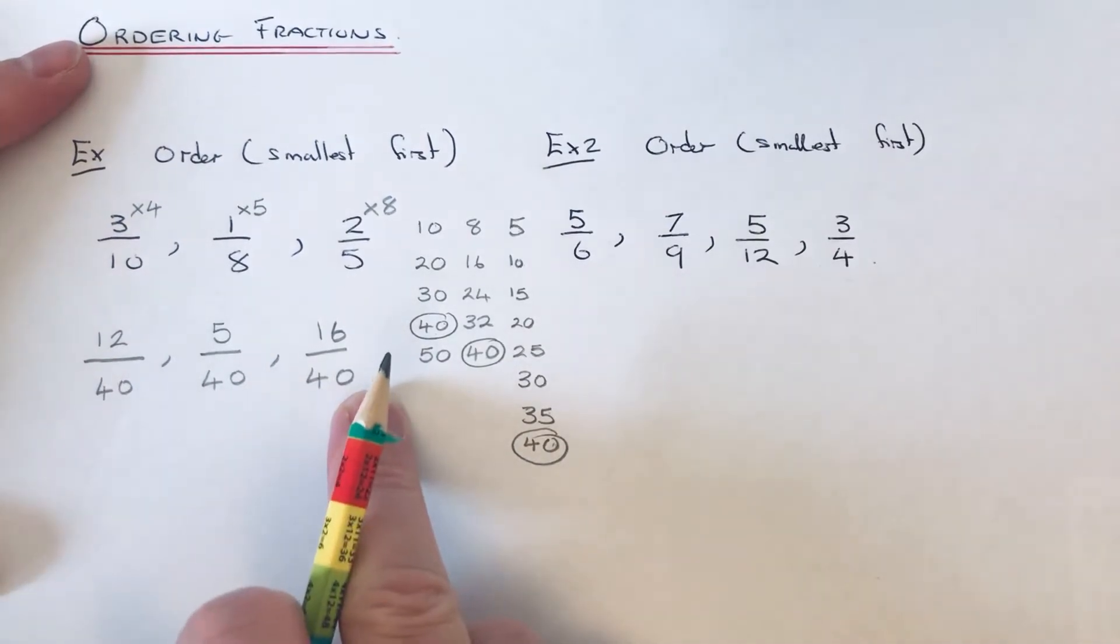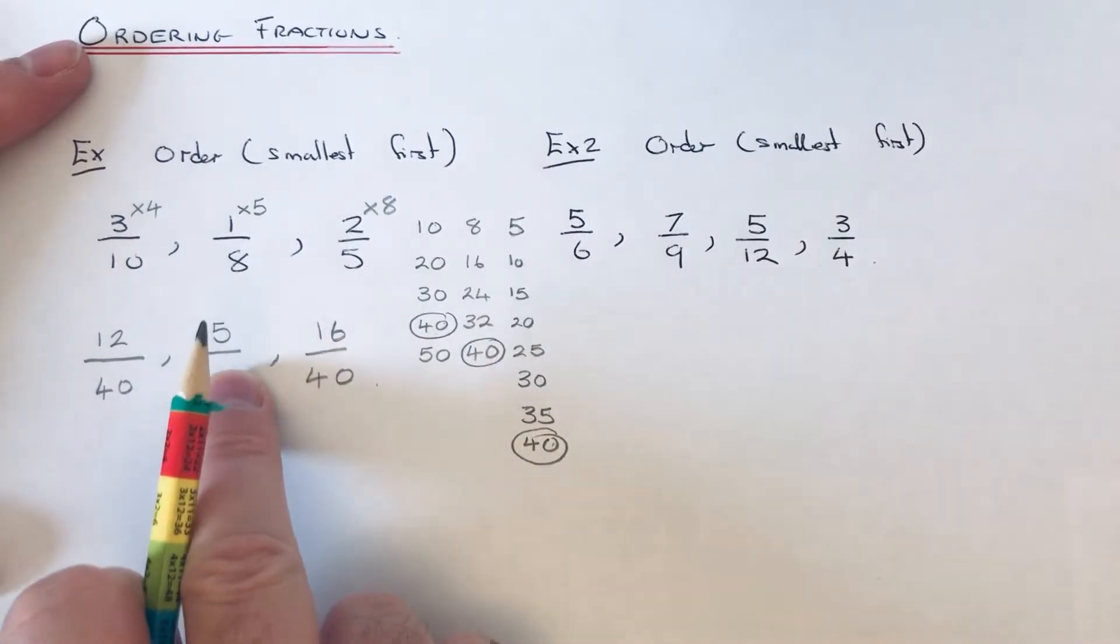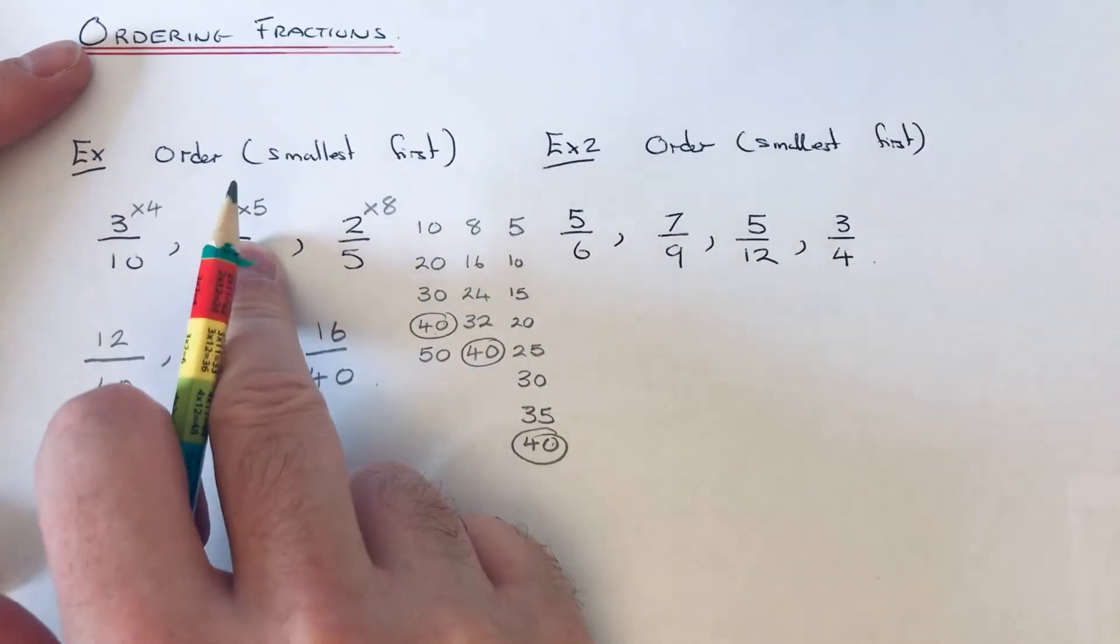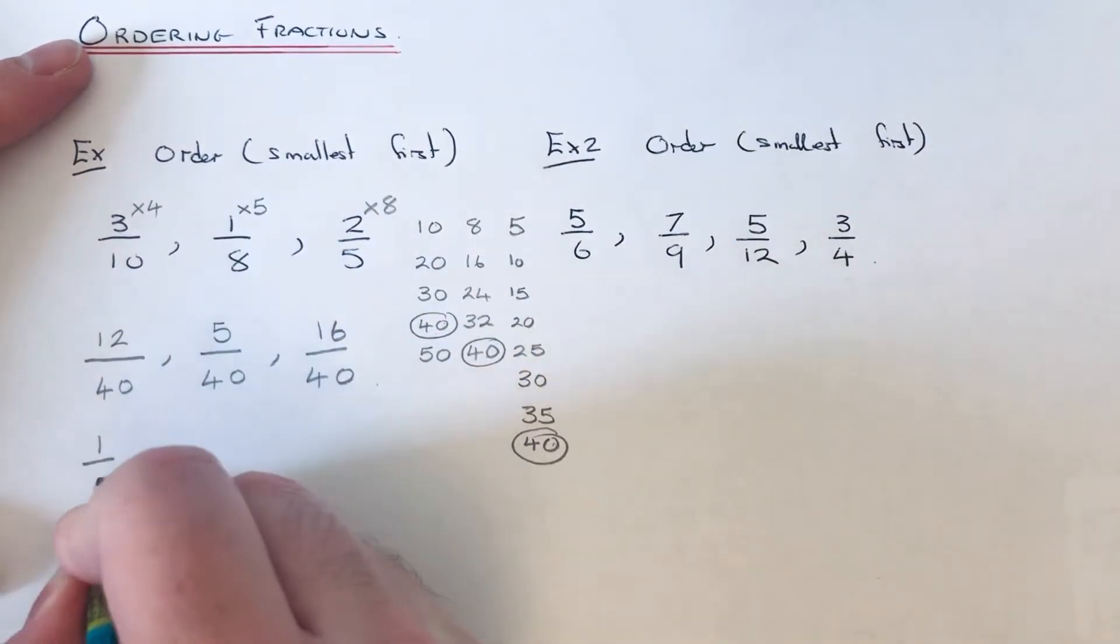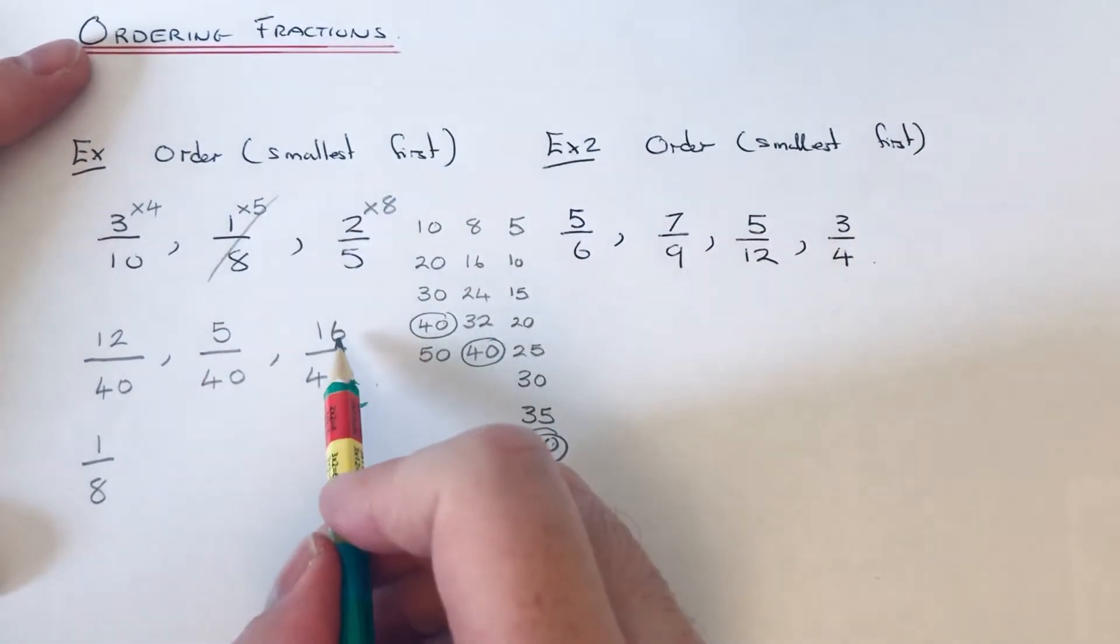Now it's pretty easy to find out which one is the smallest. We just need to look at the top numbers. So 5/40 is the smallest fraction, so that is 1/8. Make sure you write down the original fraction.